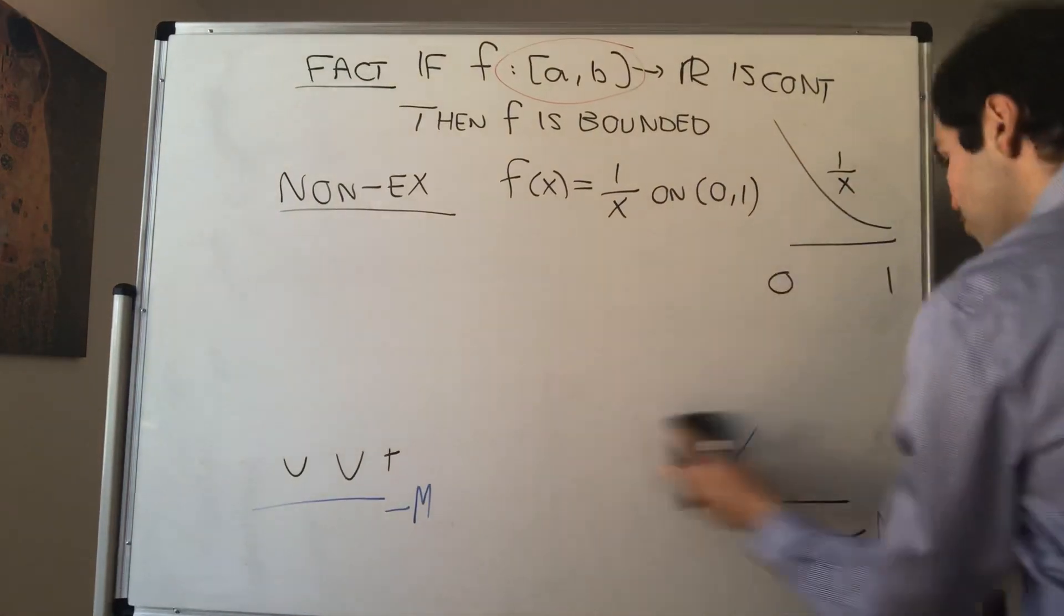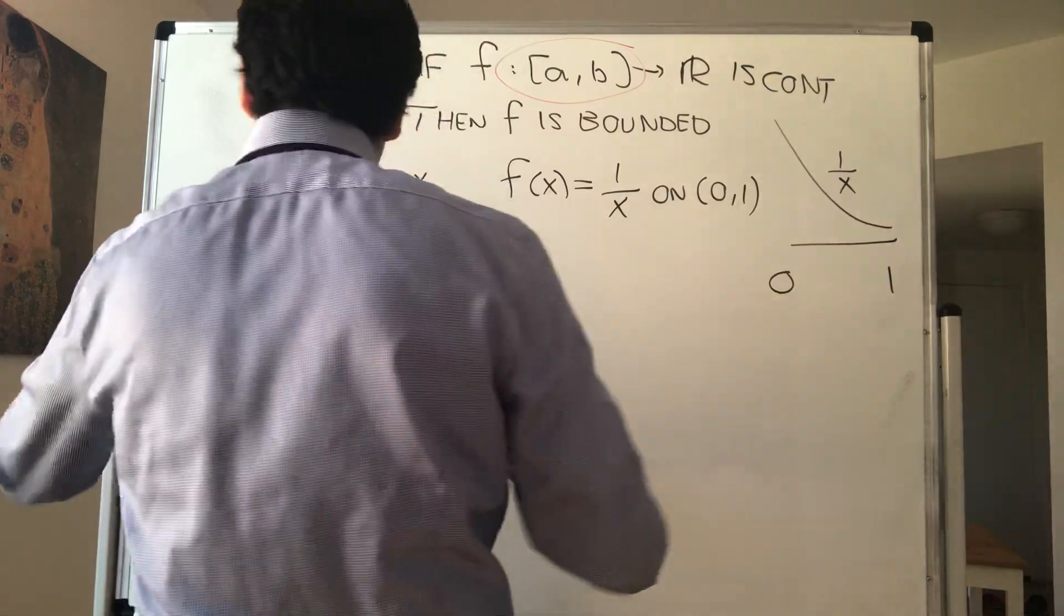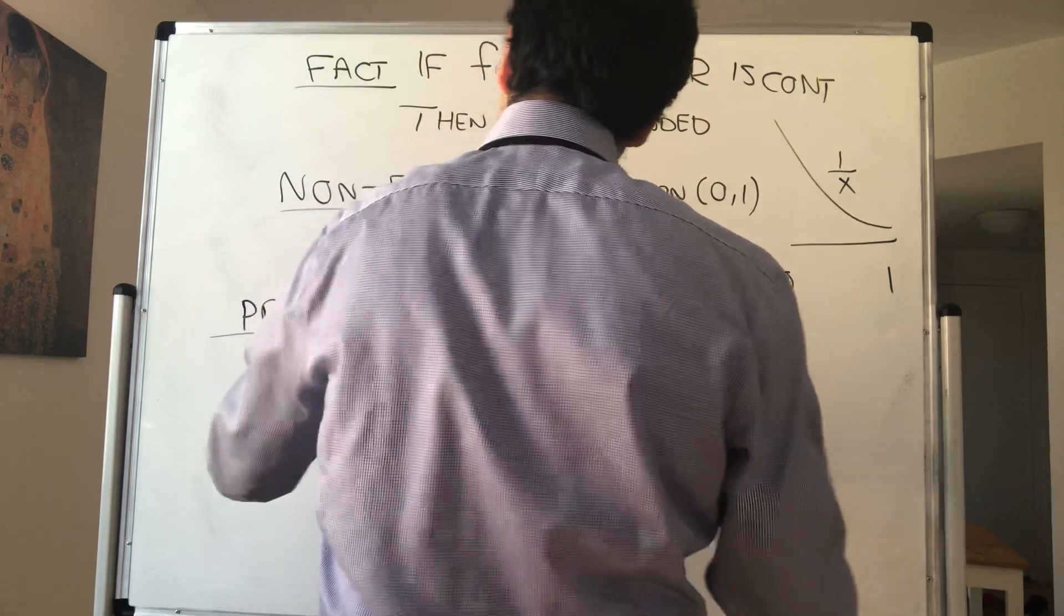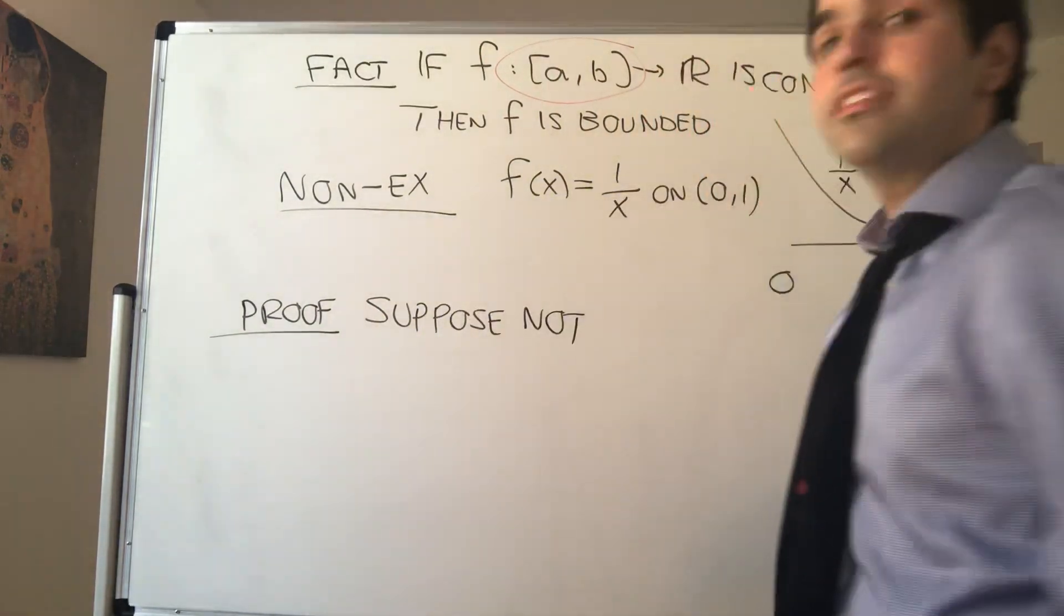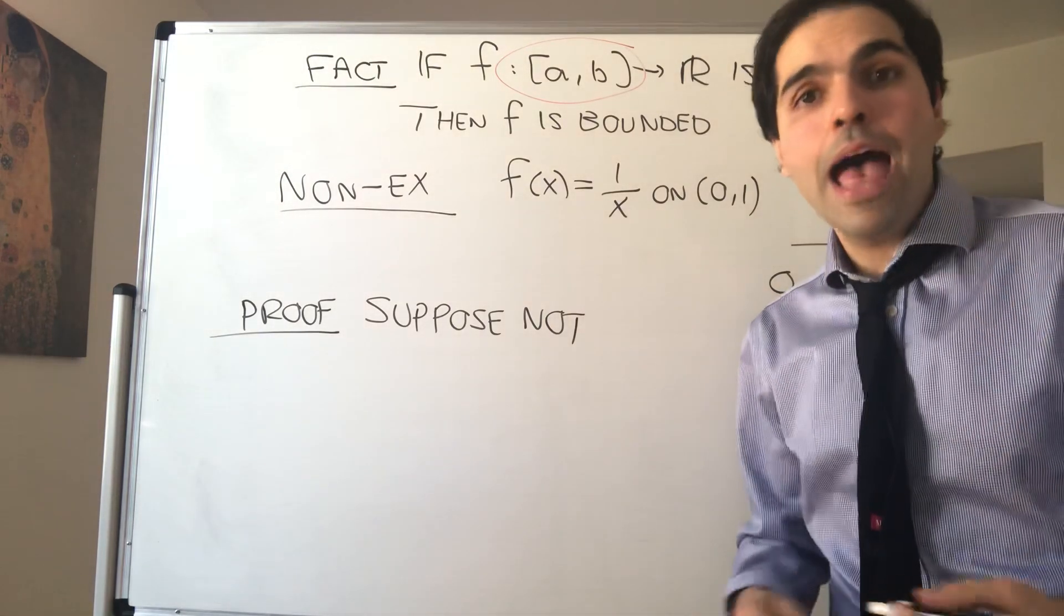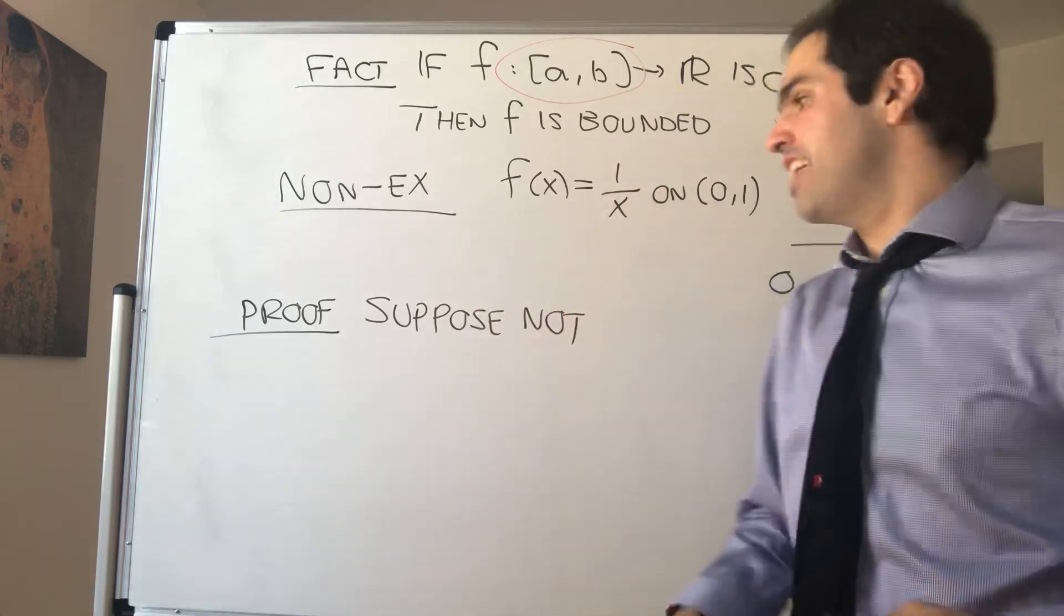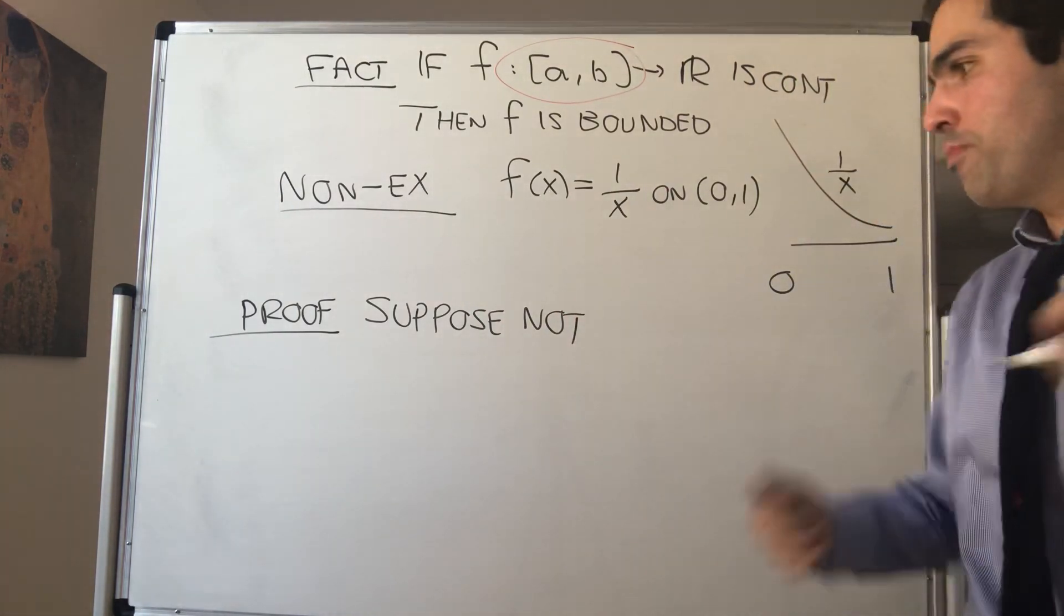Alright, and let me prove this. It's a very nice analysis proof. So suppose not. That means for every real number M, you have some x such that f(x) is bigger than N. So in particular, this is true for every natural number.